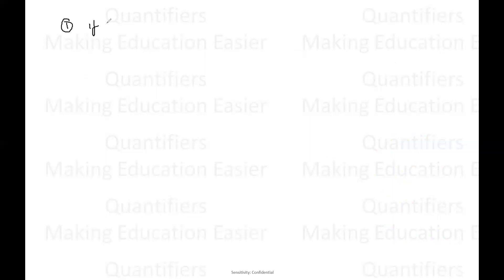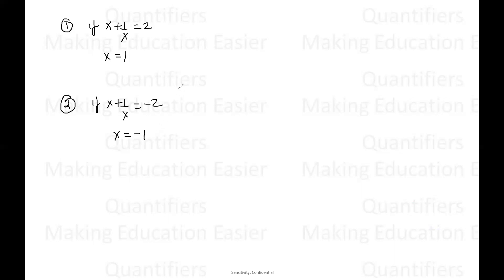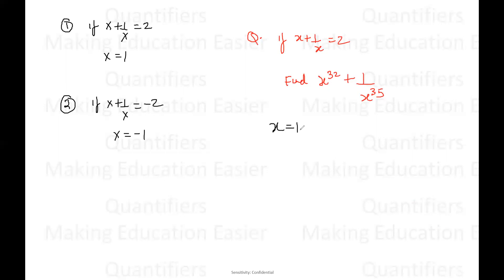Now let us do some questions based on these results. Let's say the question is: given that X plus one by X is equal to two, find X to the power 32 plus one divided by X to the power 35. Because I know that if X plus one by X is equal to two, then definitely X is equal to one. So just put X equal to one: we get one to the power 32 plus one divided by one to the power 35. So the answer will be one plus one, which is two.